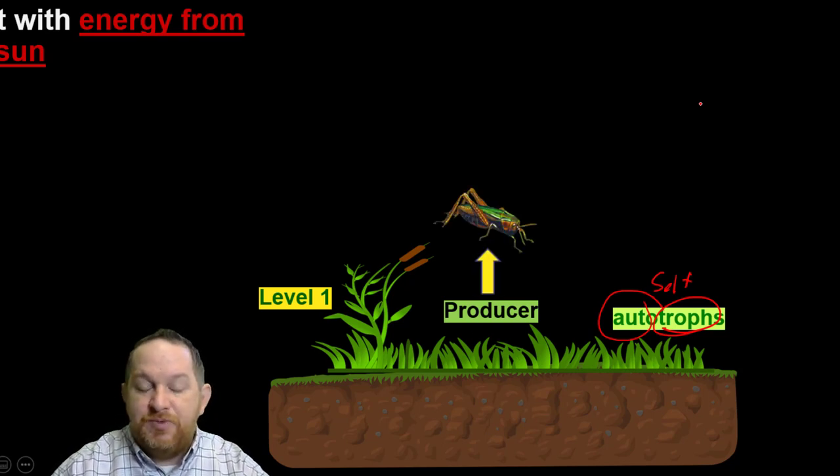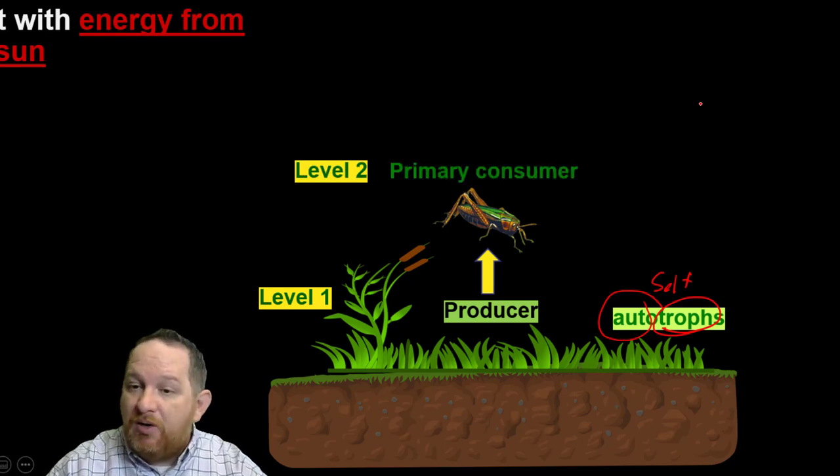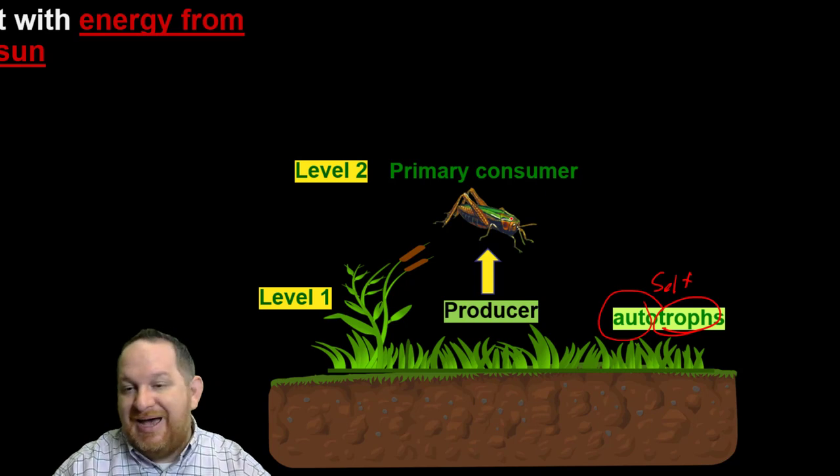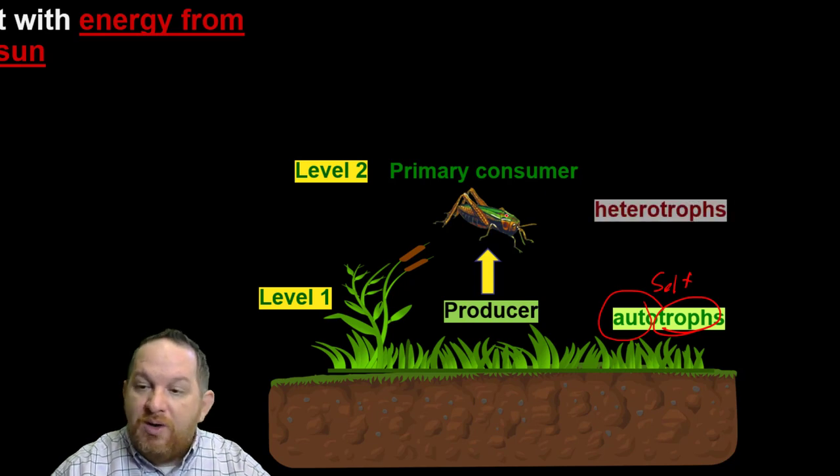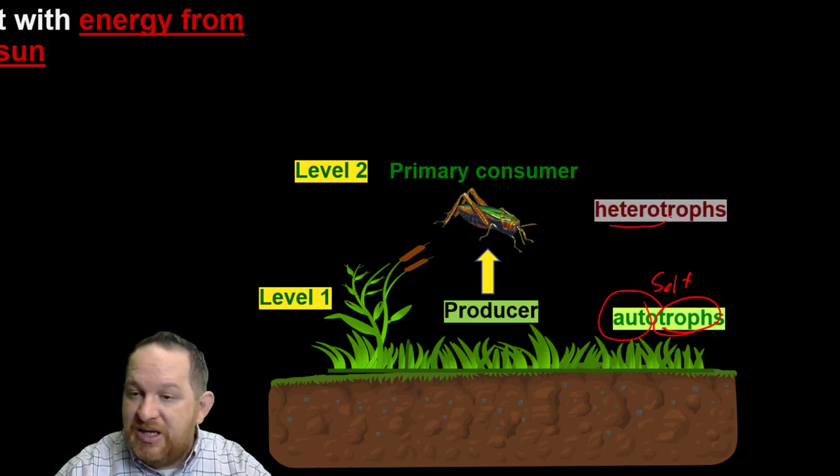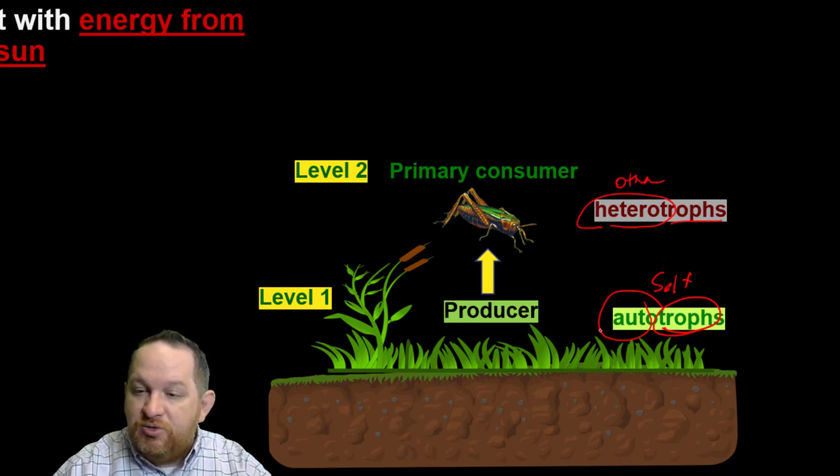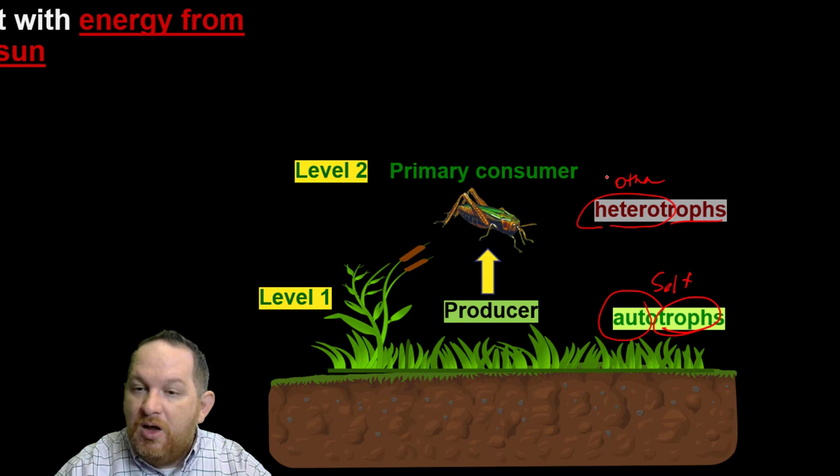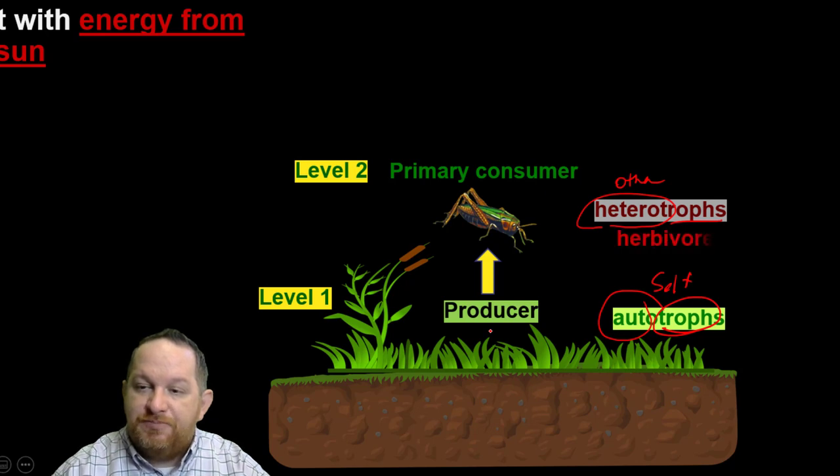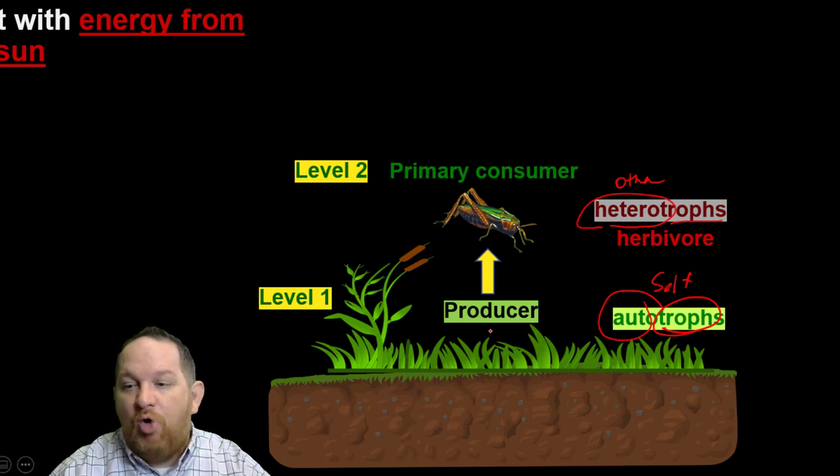We call this level one because it's primary, it's at the bottom. Another word for producers is autotrophs. Auto means self, so they feed themselves. They don't have to eat other things. Then what eats the producer? That would be level two, our primary consumer. In this case, we've got a grasshopper. It's going to eat some of the grass. The primary consumer we might call a heterotroph because hetero means other. It has to feed on others.